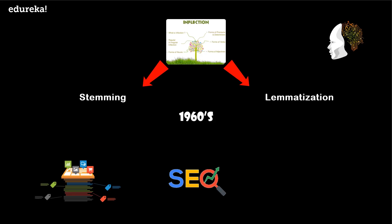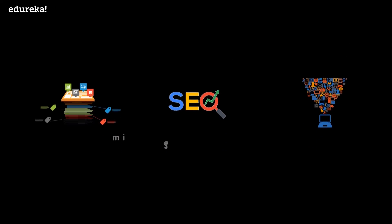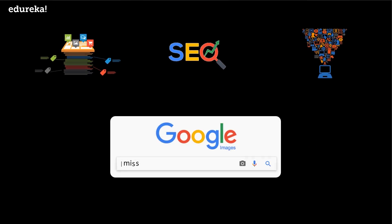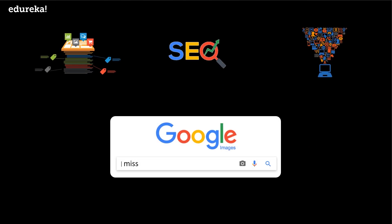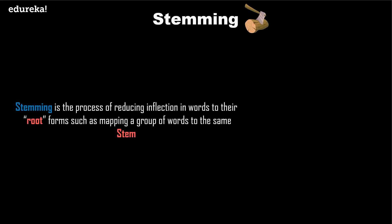Stemming and lemmatization are text normalization techniques in NLP that are used to prepare text, words, and documents for further processing. They are widely used in tagging systems, indexing, SEO, web search results, and information retrieval. For example, searching for the word 'miss' on Google will also result in 'Mrs.' and 'missing', as 'miss' is basically the stem of both these words.